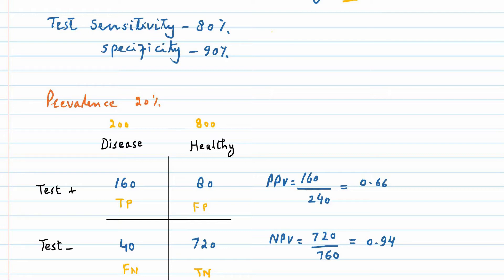Similarly, we can calculate the true negative and false positive test result rates in healthy people. When we calculate the positive predictive value, we can see that the positive predictive value in this case is 66%, while the negative predictive value is 94%.